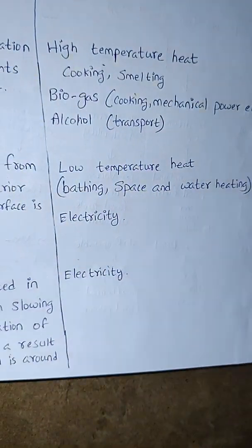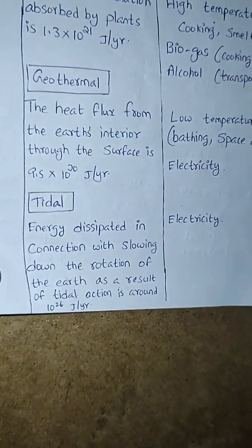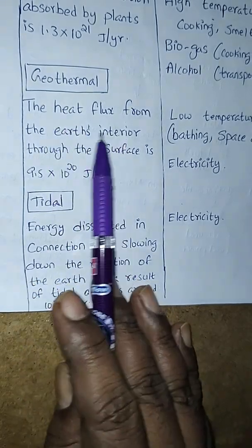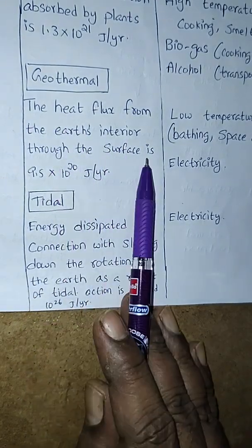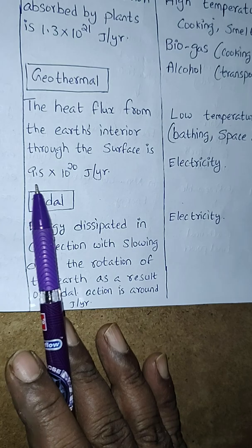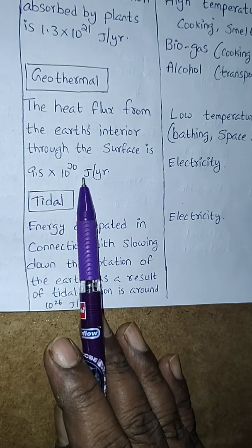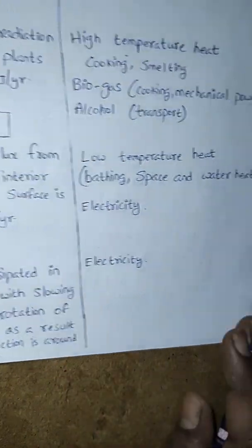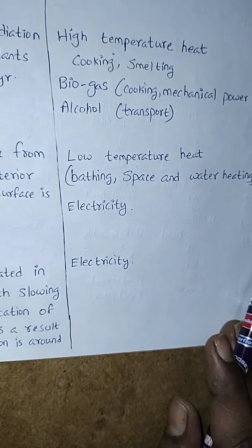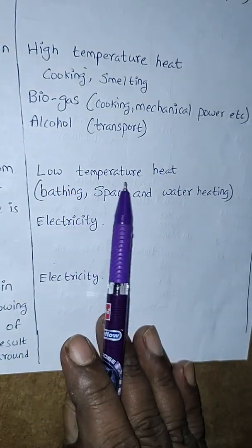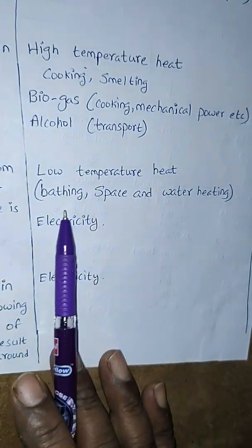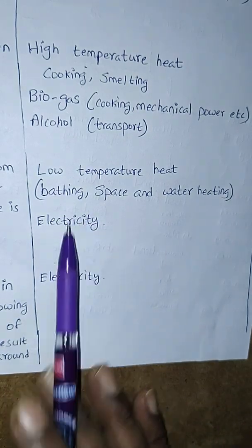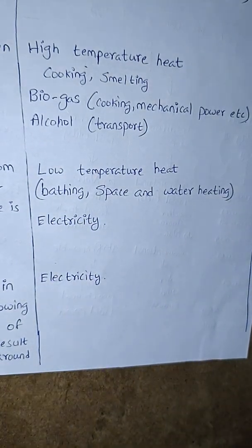Next is geothermal energy. The heat flux from the earth's interior through the surface is 9.5 × 10²⁰ J/yr. Applications include low temperature heat for bathing, space heating, water heating, and electricity generation.